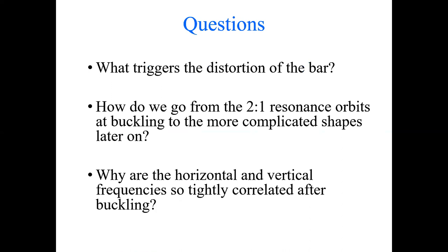That's all I have prepared. Instead of a summary, I would like to pose some open questions and invite feedback. First: what triggers the distortion of the bar? How do we go from the 2:1 resonant orbits at buckling to the more complicated pretzel-like orbit shapes later on? And why are the horizontal and vertical frequencies so tightly correlated after buckling — why is this relation tighter after buckling than at the vertical resonance at the beginning of buckling? That's all. Thank you.